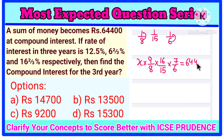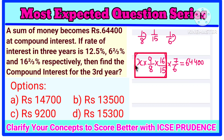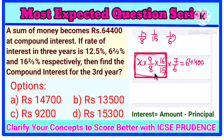Observe carefully: X × 9/8 × 16/15 is the principal for the 3rd year. If we find the value of this principal — let us call it P, the principal of the 3rd year — then we can find the interest. Amount minus principal will give the compound interest for the 3rd year.